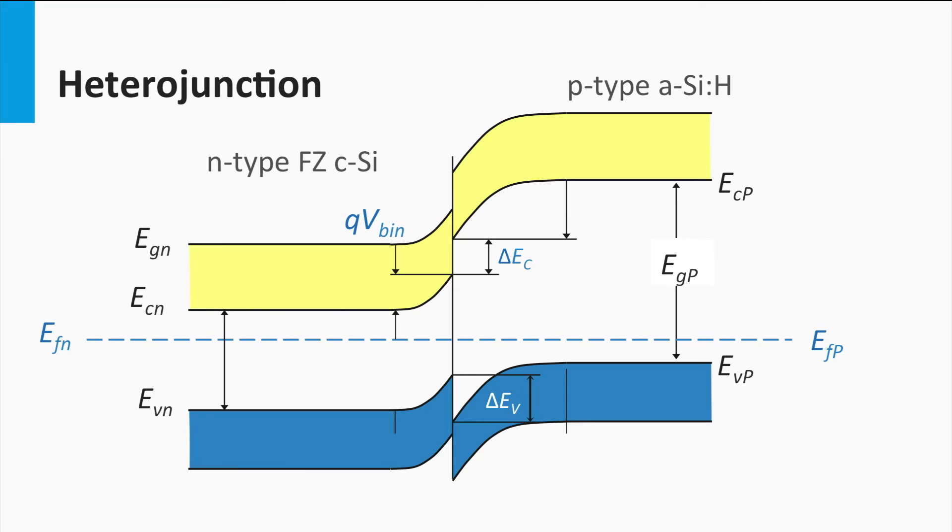This will allow the minority charge carriers, the holes, to drift to the P-type silicon.